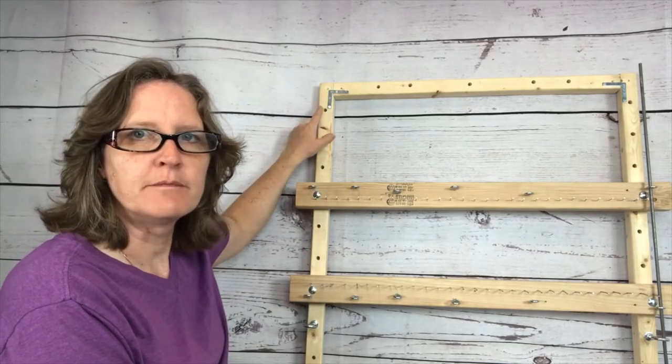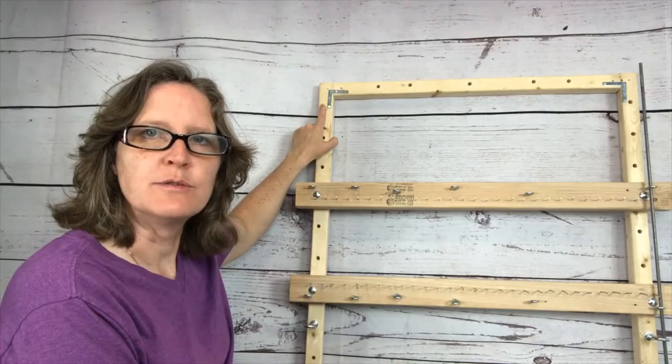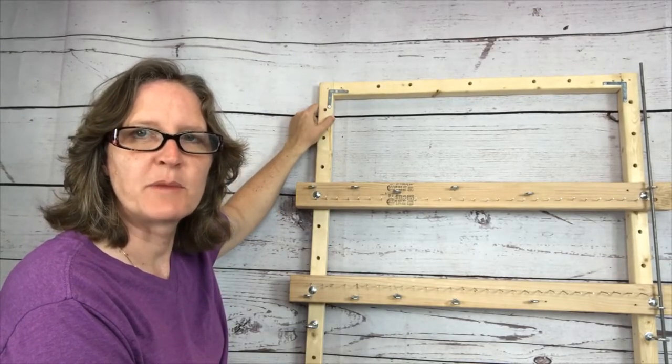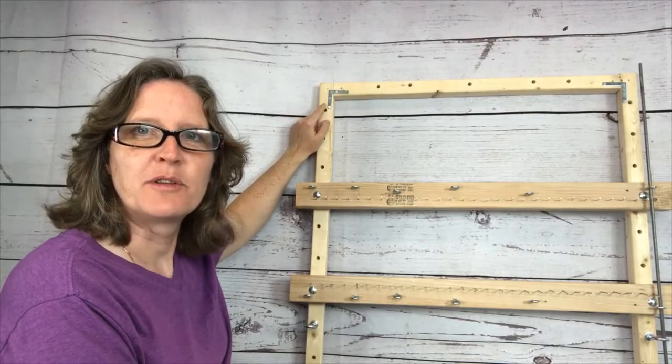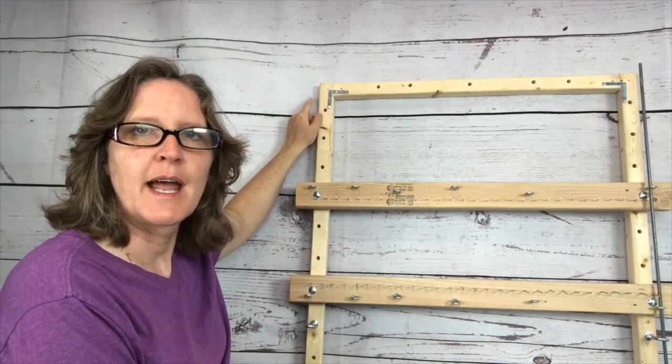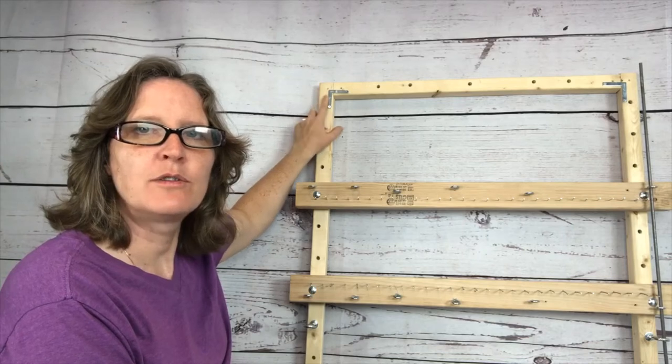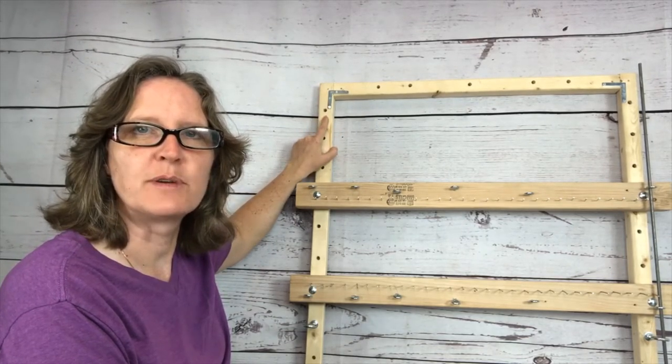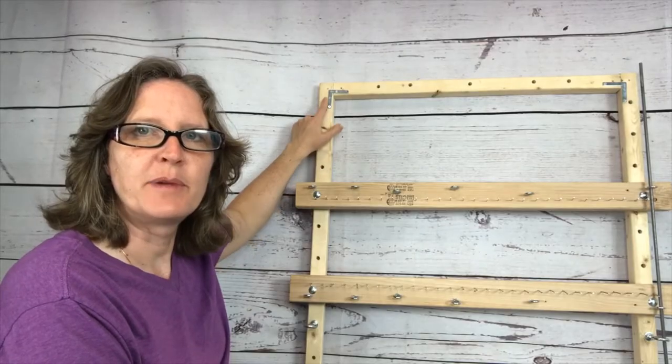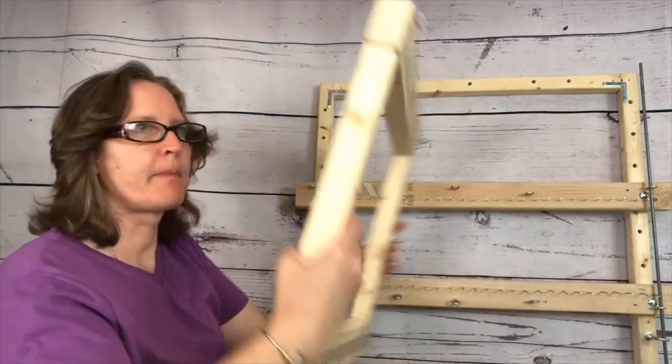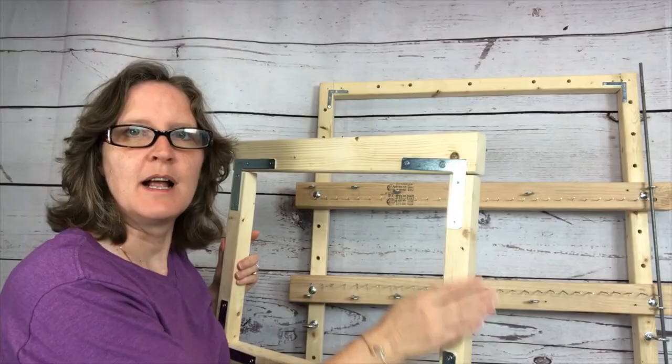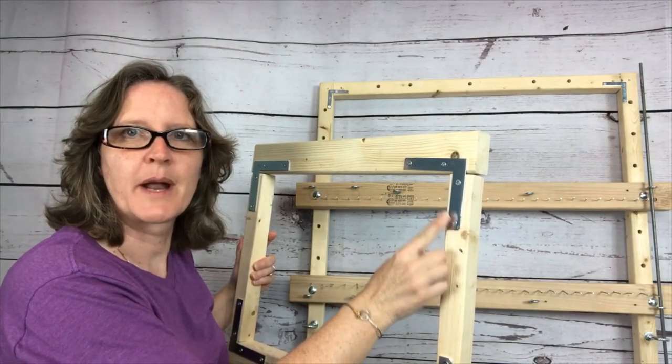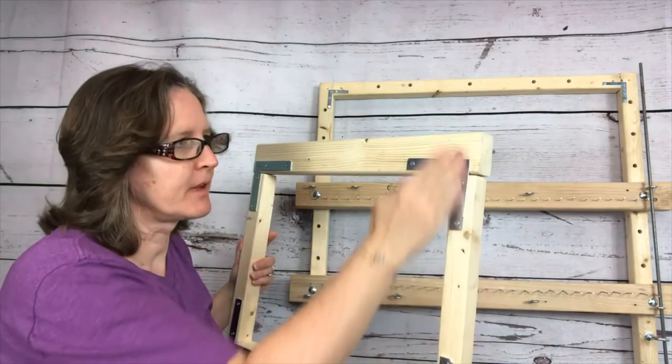So I start with a frame. My frame is two by twos that I've held together. I used a square to make sure my corners were nice and square and then put corner brackets on the front and on the back. I didn't use too big of a corner bracket because I wanted to have my first hole at three inches and if I had a big bracket then that kind of gets in the way of the hole right away so then I would need taller sides.